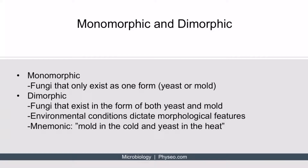Now that you understand molds and yeast, let's discuss monomorphic and dimorphic fungi. Monomorphic fungi are those that only exist as one form — they will forever be a yeast or a mold, and the morphology will not change based upon environmental conditions. Dimorphic fungi, on the other hand, are those that can exist in the form of both yeast and mold, and this varies depending on the environment. Environmental conditions dictate morphological features — in the presence of cold, the fungus may assume one form, and in the presence of heat, it will assume a different form.